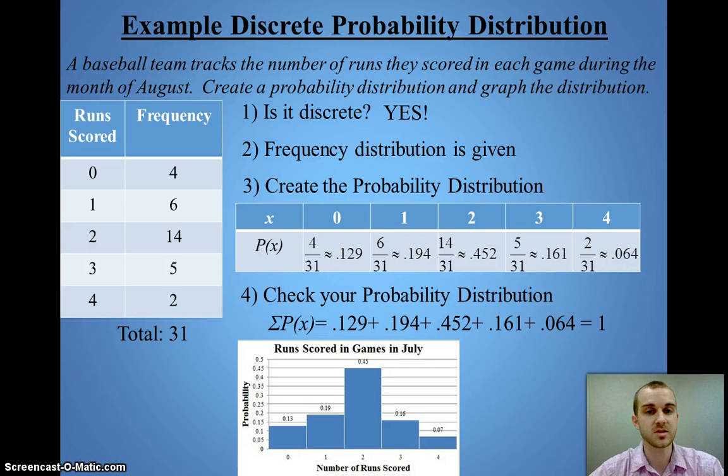Once I graph it, I use a histogram, and I can see that probably on average it's looking like it's close to 2 runs scored a game. And it is relatively symmetric and bell-shaped as well.